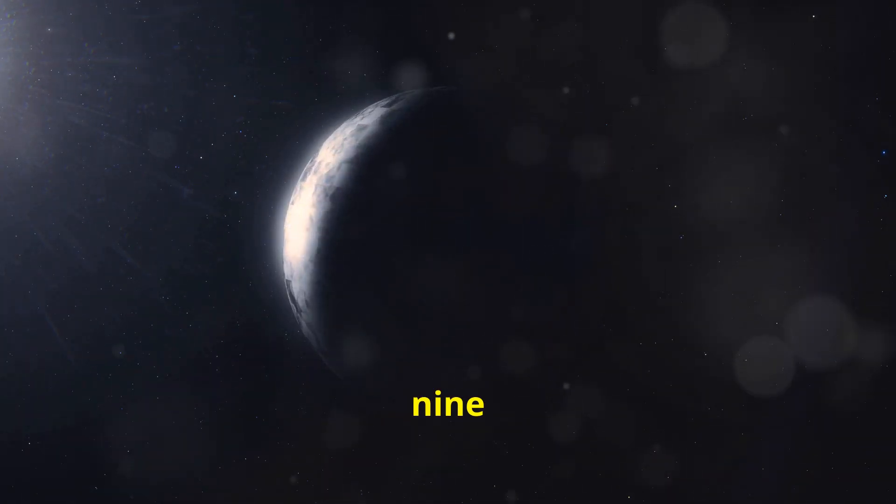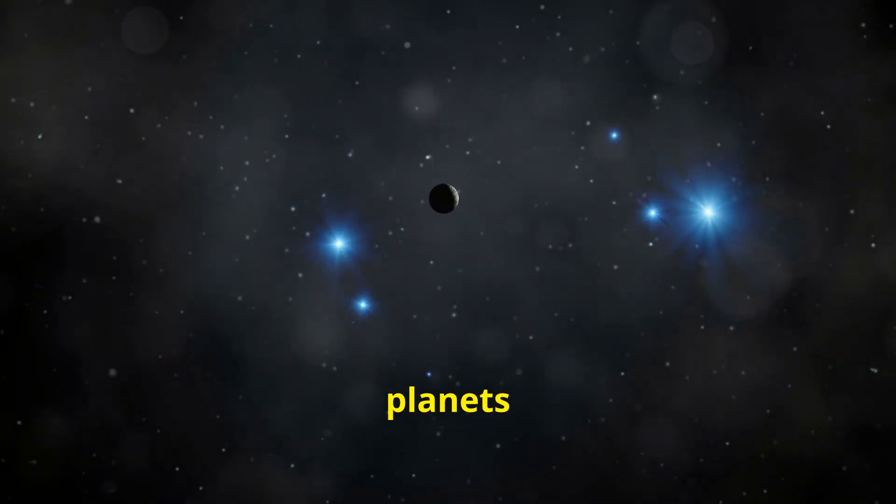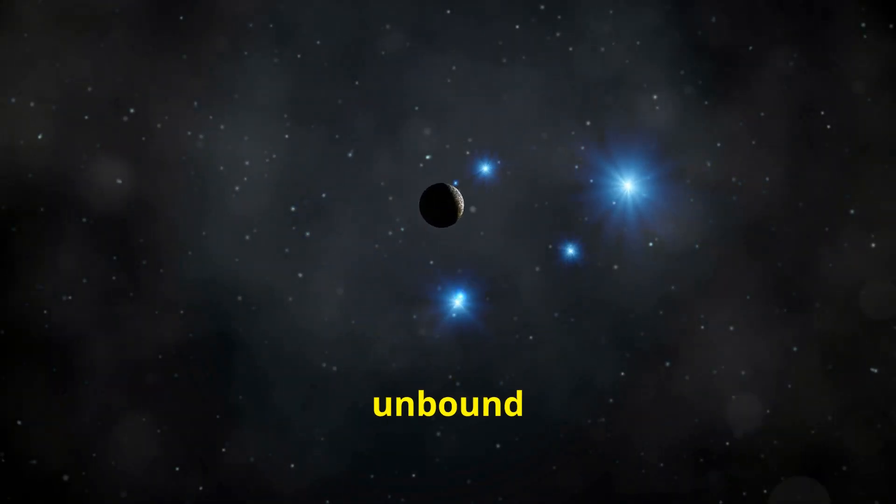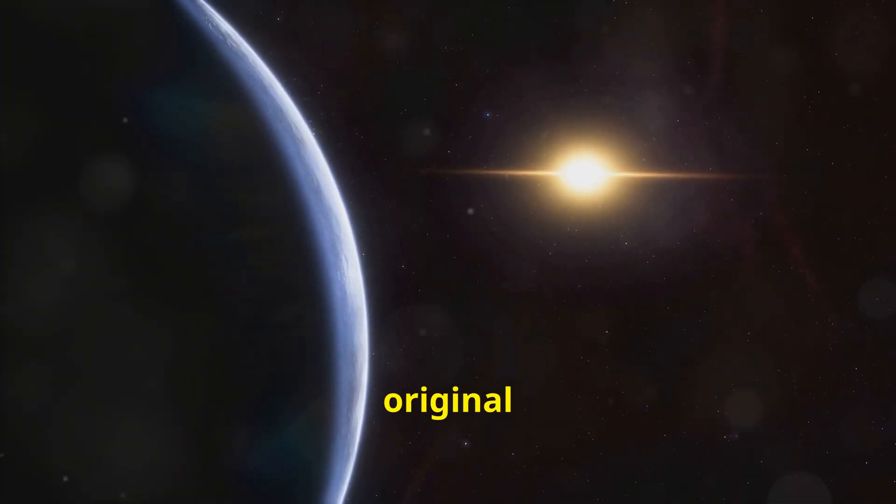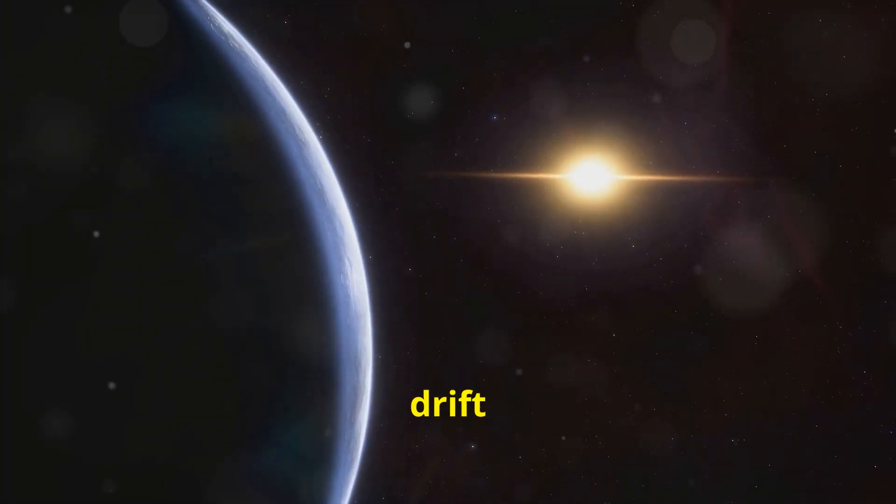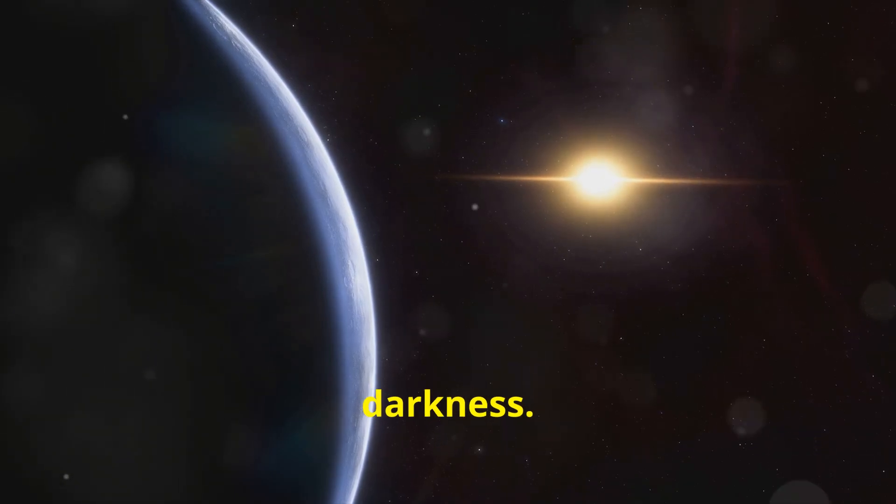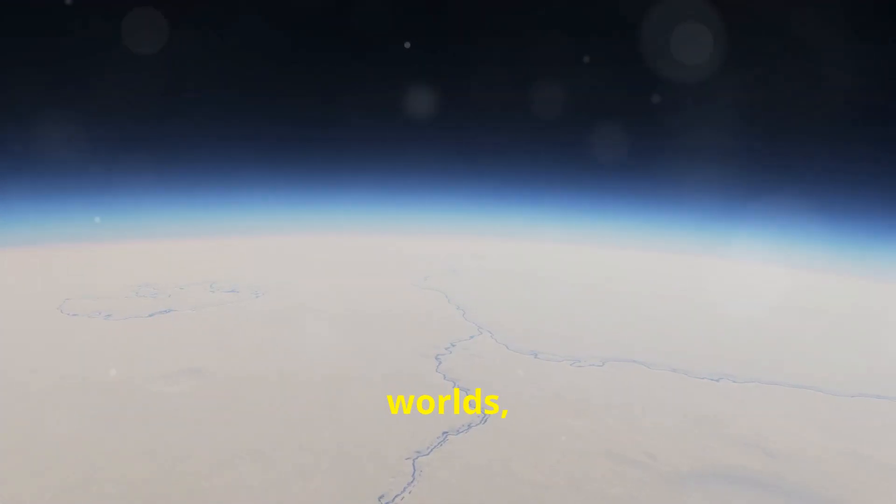Number 9, rogue planets. These are planets that wander the galaxy, unbound by the gravity of any star. Ejected from their original star systems, they drift through the cosmos in perpetual darkness. On these frozen worlds, temperatures plummet to unimaginable lows, and the surface is an endless, lightless wasteland.